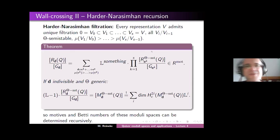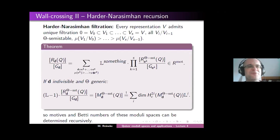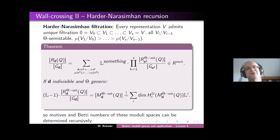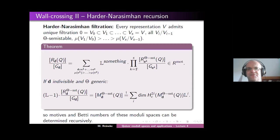If you don't like such big formulas, I will rewrite it for you as a very short formula on the next slide. Just look again at the ingredients: here on the left-hand side you have the total space — all representations — and here on the right you have a huge sum over products of contributions just from semi-stables. That's the essence of the formula, apart from all motivic details.